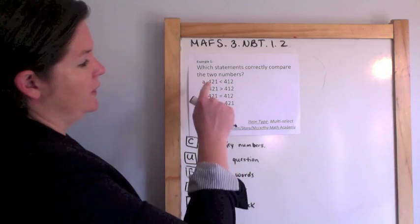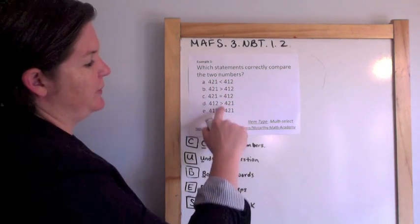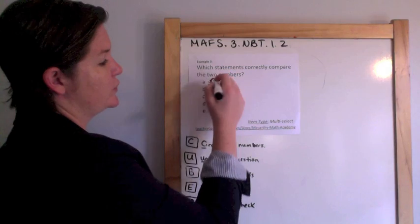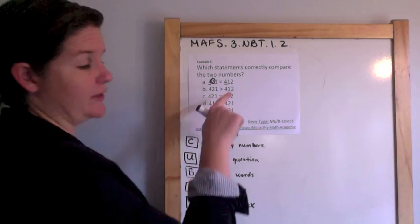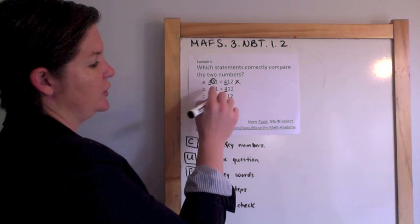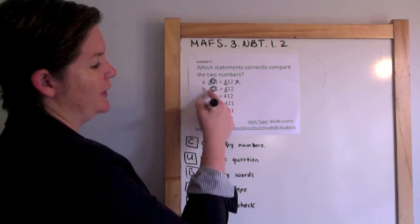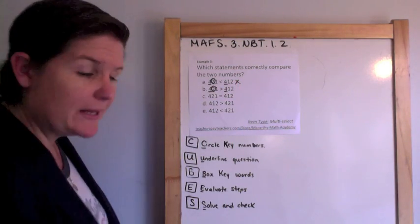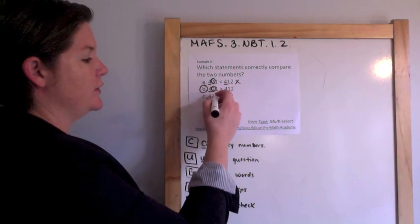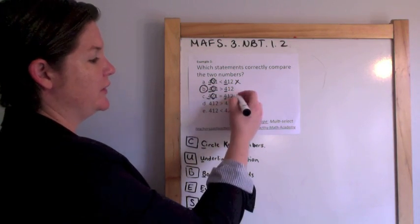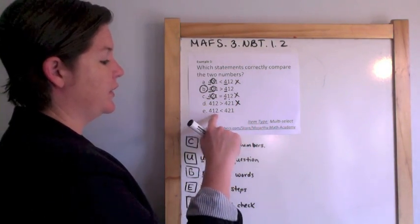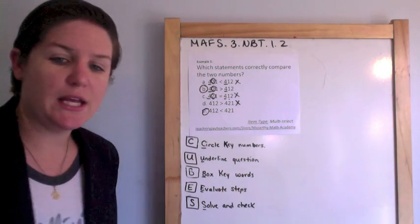We've got 4 and 4, they are the same, so we are moving on. 2 and 1, they're different. This one is greater. But the alligator mouth, the greater than sign, is pointing towards this one being greater, which is false. 4 and 4, they are the same, so we're moving on. 1, 2, and 1. This one is greater. And yes, the alligator mouth is going after that one, so this one would work. 4, 4, they're the same, moving on. 2, 1. No, this one is greater, not equal to. Here, 412 is not greater than 421. And here, 412 is less than 421. So, B and E are your answers.